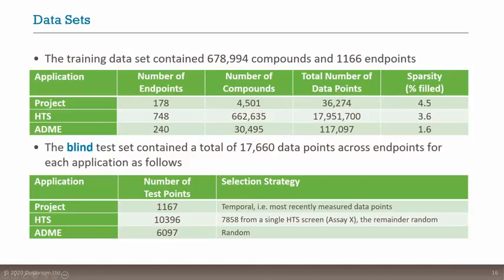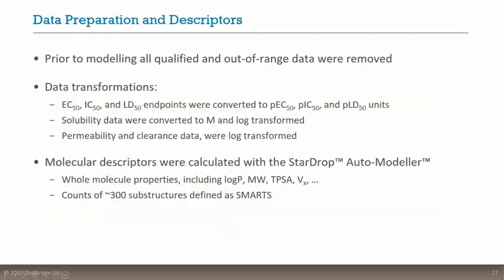For the high-throughput screening question, we looked at how we could predict a full screen from a pilot deck. Most of the HTS test set came from a single assay we call Assay X here — all data was anonymized; we don't know what the structures or assays were. For the third question around ADME prediction, we held out a random set of data.